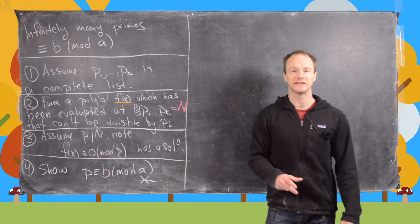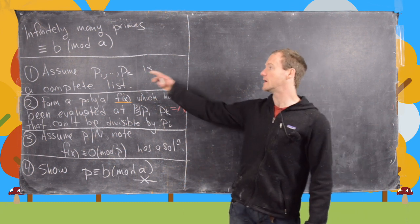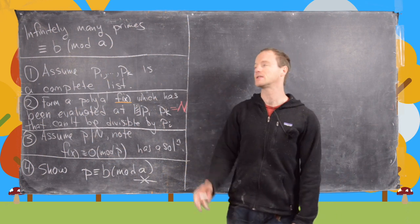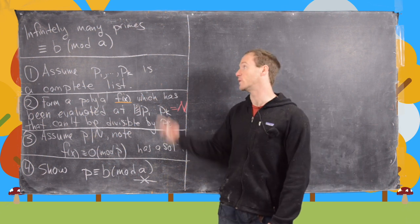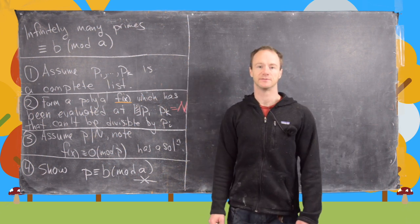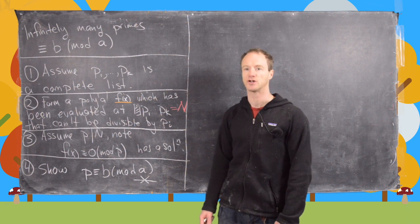So the first step is as follows. You want to assume that P1 to PK is a complete list of primes of the form that you're trying to prove which there are infinitely many primes of. So in other words we're working towards a contradiction here.